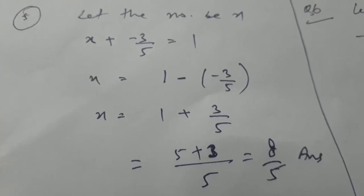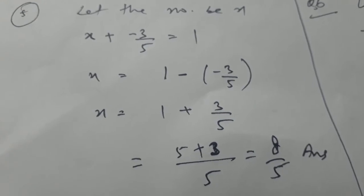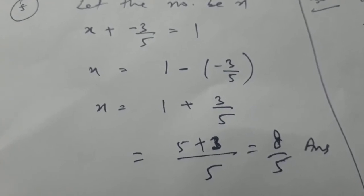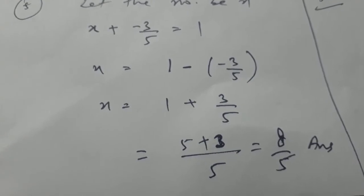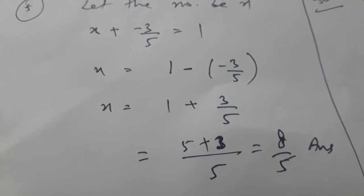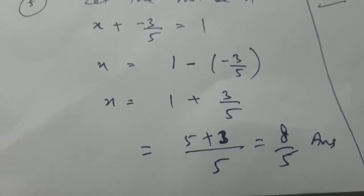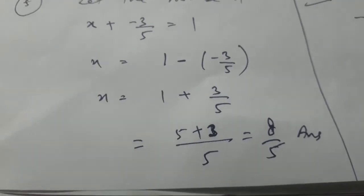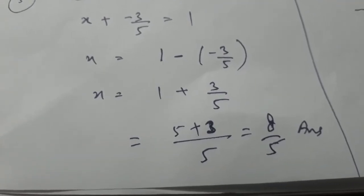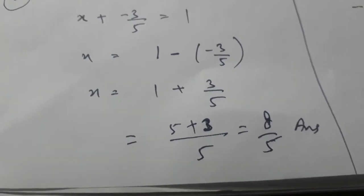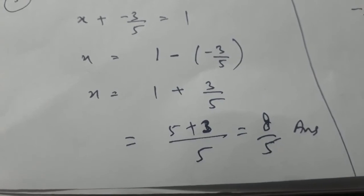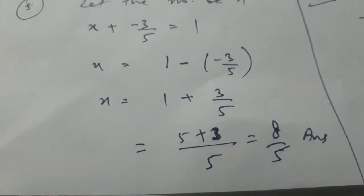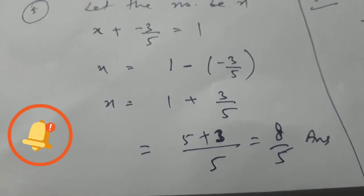In question number 5, a number should be added to minus 3 by 5 to get 1. So we will assume that number as x. x would be added to minus 3 by 5 to get 1. As minus 3 by 5 is getting added in the LHS, we will shift minus 3 by 5 to the RHS. The sign would get changed. So next step would be x equal to 1 minus minus 3 by 5. After opening the bracket, minus minus would turn into plus. Take the LCM. Dealing the numerators with the LCM, 5 plus 3, that is 8 by 5 is the answer. So 8 by 5 will be added to minus 3 by 5 to get 1.